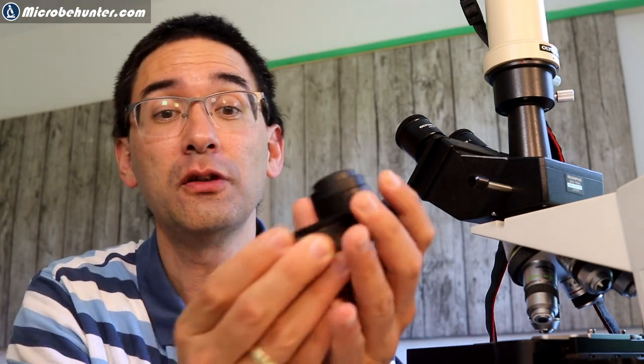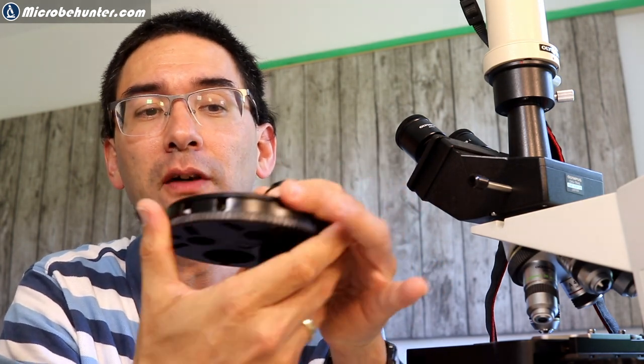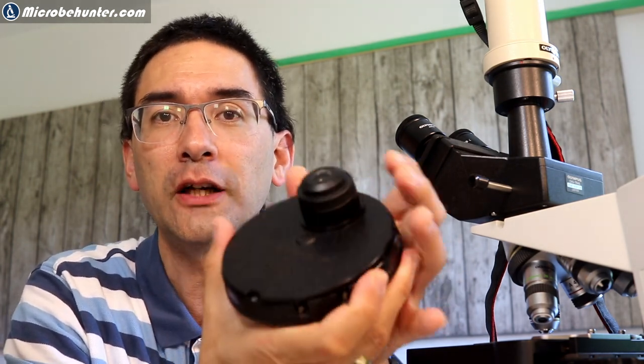All you have to do is you've got to change this to bright field here by rotating. And then you have a regular bright field. There is a small loss in image quality, however, because of the so-called phase ring, which you can see inside the objective. But that, I would say, is the topic of a separate video. So I'm going to now continue and I'm going to show you some more pictures under phase contrast.